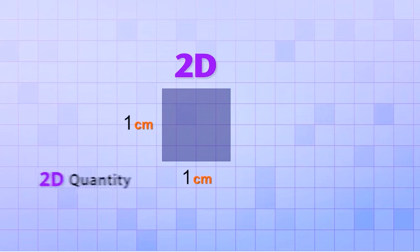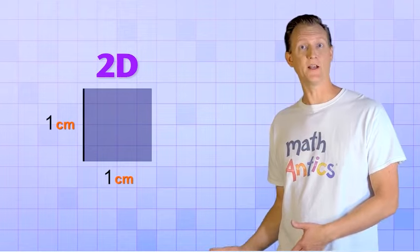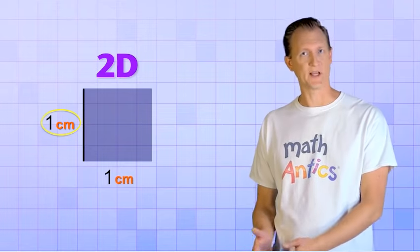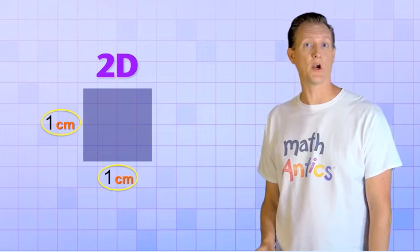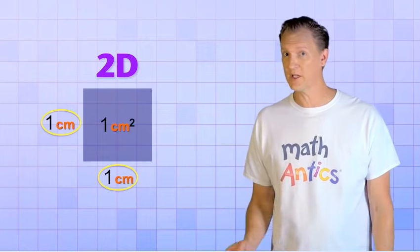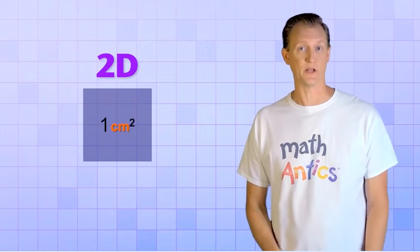2-dimensional objects are measured by the 2-dimensional quantity that we call area. Because the original line was 1 centimeter long, and we extended it a distance of 1 centimeter, the amount of area that this square occupies is 1 square centimeter, which is a common unit for measuring area.